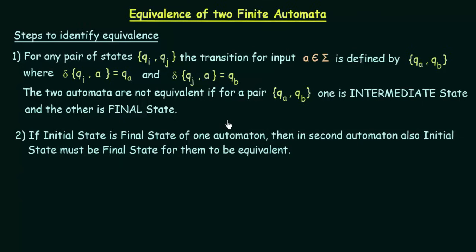The second step says: if the initial state is also the final state of one automaton, then in the second automaton the initial state must also be the final state for them to be equivalent. Otherwise they will not be equivalent.